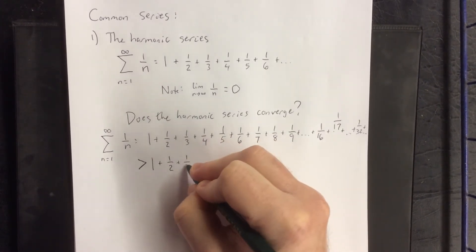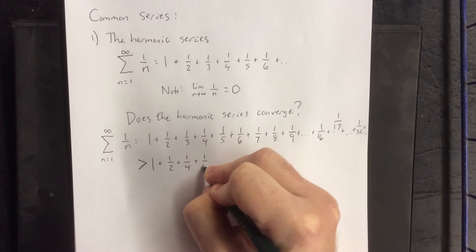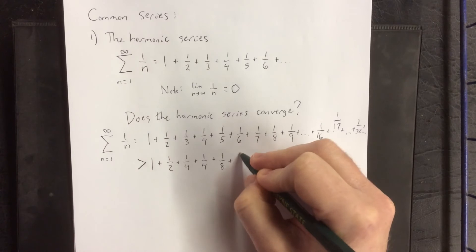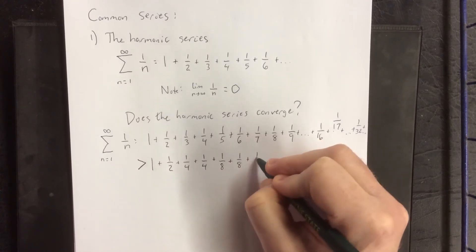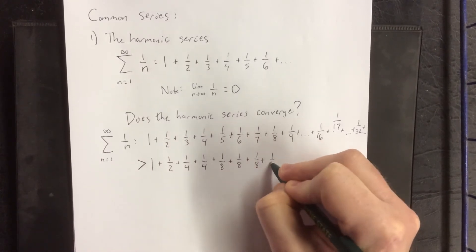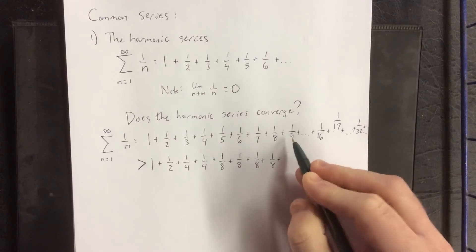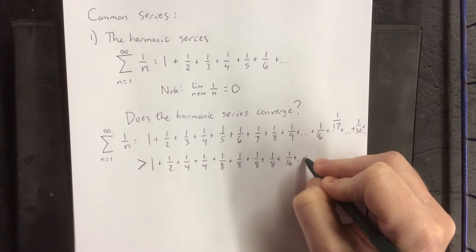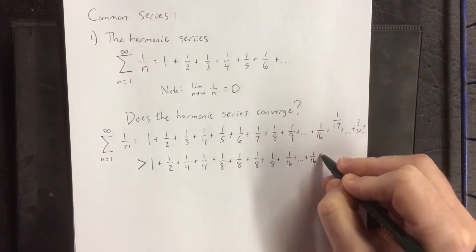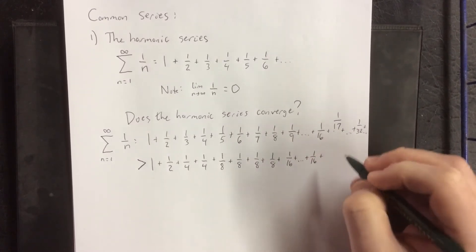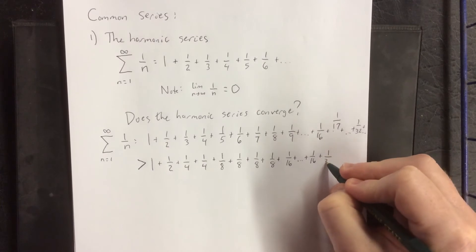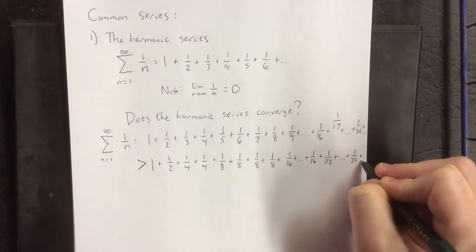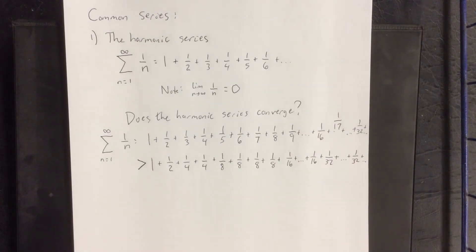So 1 third, I'm actually going to reduce that value to 1 fourth. 1 fifth and 1 sixth and 1 seventh, I'm going to reduce all of those to 1 eighth. For 1 ninth through 1 fifteenth, I'm going to turn them all into sixteenths. Then for 1 seventeenth through 1 thirty-first, I'm going to turn them all into 1 thirty-seconds. I'm going to do something similar all the way down the harmonic series. Reason being,